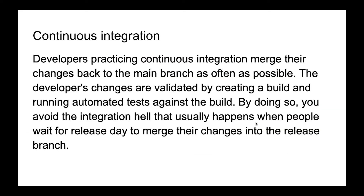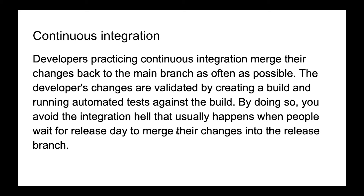You can pause the video and read what it means on the schema. Continuous integration: when developers merge their changes back to the main branch as often as possible to get the latest version of code and know that their changes didn't break anything. Their changes are validated by creating a build and running automated tests against the build — it might be unit tests or integration tests. By doing so we avoid the integration hell that usually happens when people wait for a release date to merge their changes into the release branch.